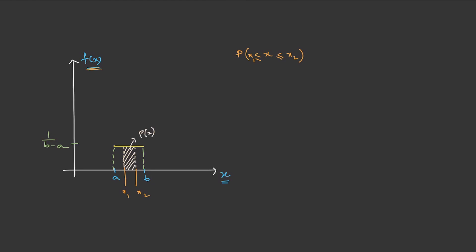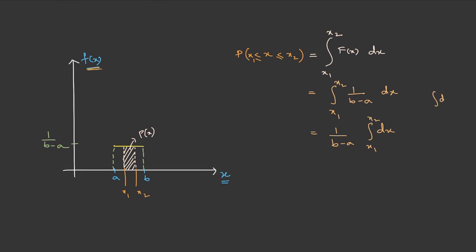The area under the graph gives the probability. Mathematically, probability can be written as the integral of f(x) dx from x1 to x2. Substituting the values, this becomes the integral from x1 to x2 of 1/(b minus a) dx. Since 1/(b minus a) is a constant, it can be taken out. The integral of dx is x, so this becomes (1/(b minus a)) times x evaluated from x1 to x2, giving (x2 minus x1) divided by (b minus a). This is the probability.